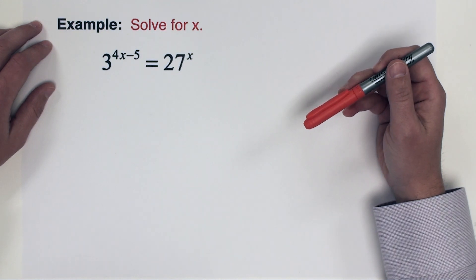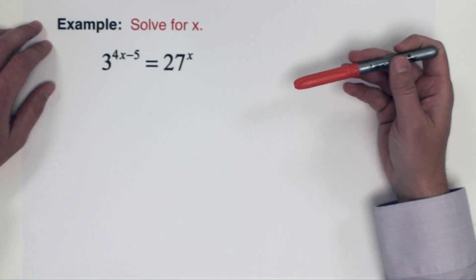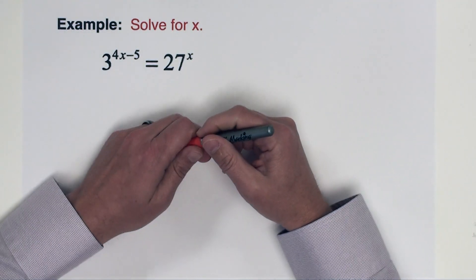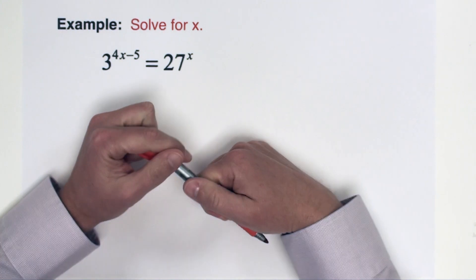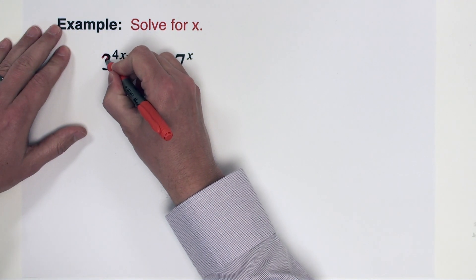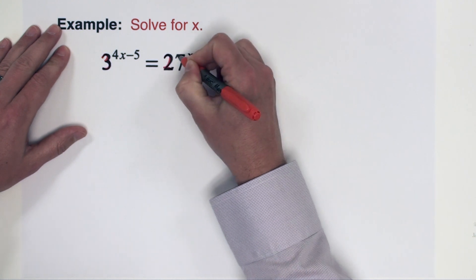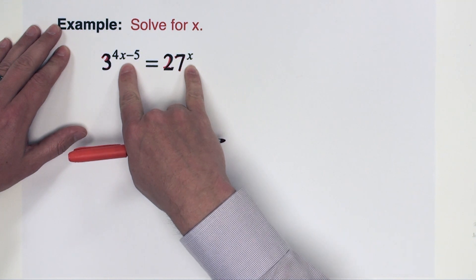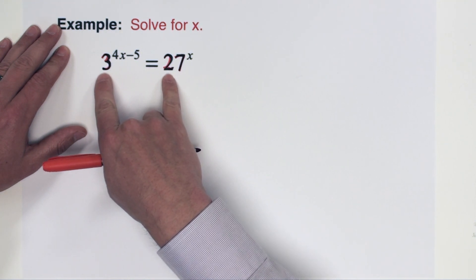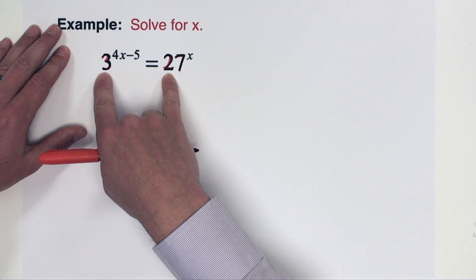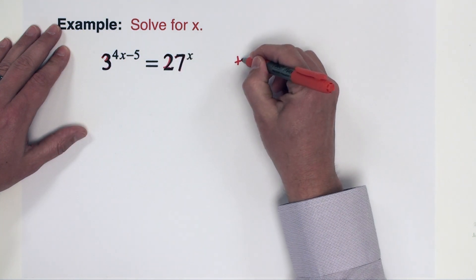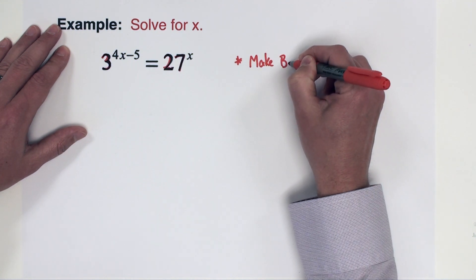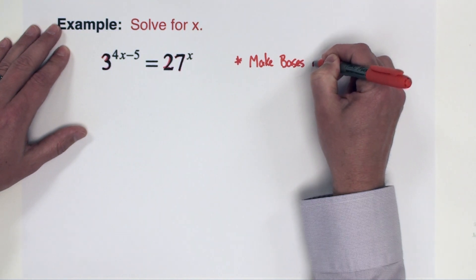The technique for today's video is going to be one where we're going to change the base on both sides of the equation to a common base. Now in this equation here, the bases are 3 and 27. The exponents are 4x minus 5 and x. So what I want to do is change these two numbers so that they are the same number. So step one is we're going to make the bases match.